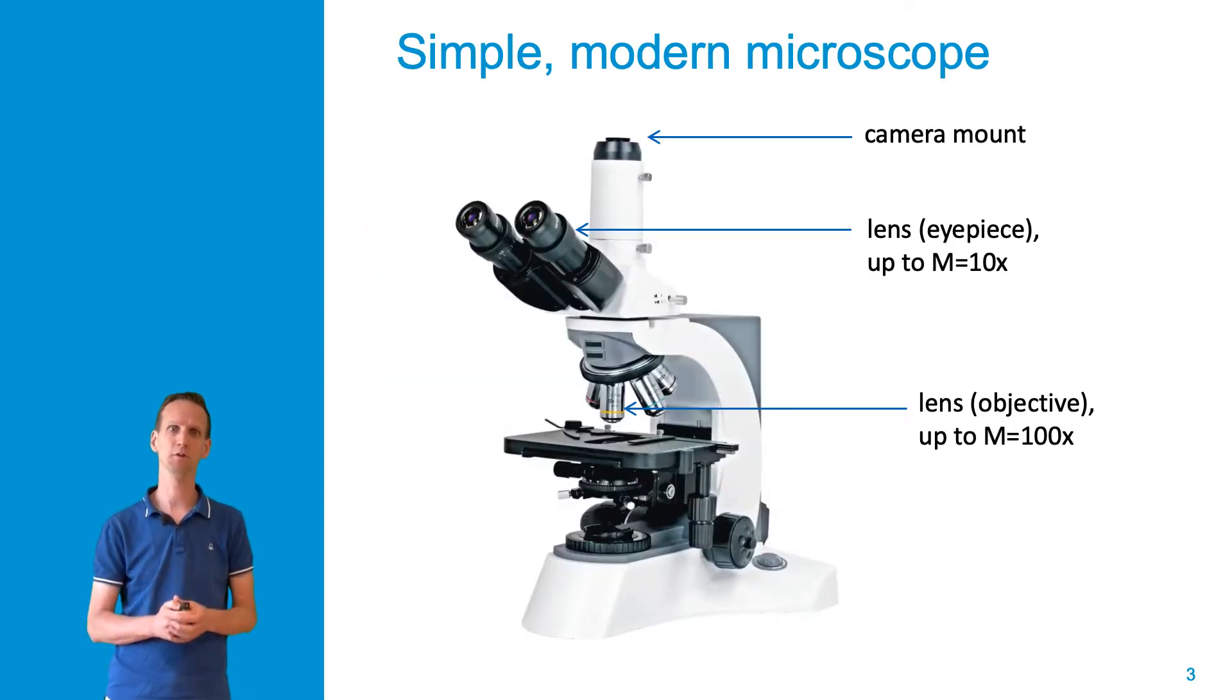This system is very different from a modern day microscope that you see depicted here. This is just a simple microscope layout, but you can already see that there is a much more complicated lens system involved. We can clearly identify the objective lens, which can reach magnifications of about 100 times, remarkably the same as what Anthony van Leeuwenhoek reached.